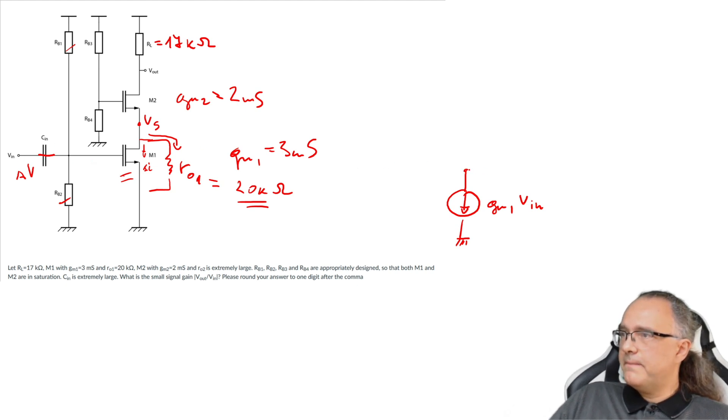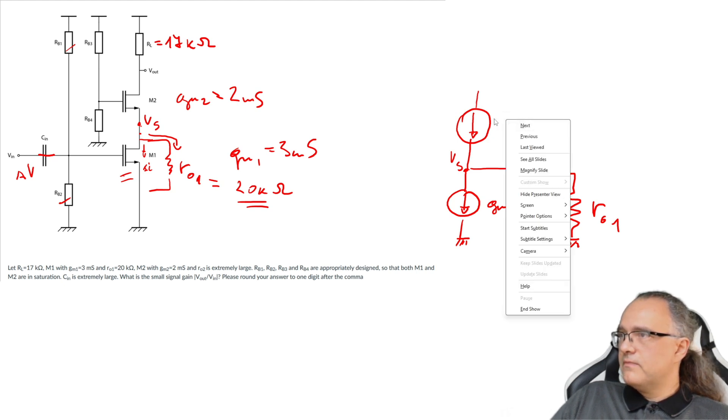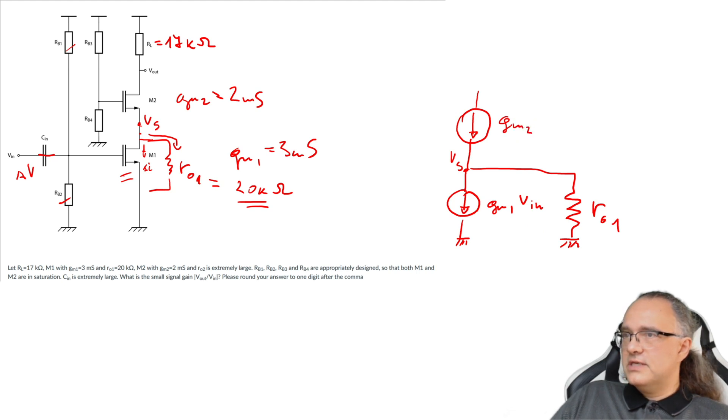Now we have in parallel here is the drain. This is this node and in parallel is R out one. So I have to draw R out one to ground and this node, this node is Vs. So this is this node. Here I have the source of M2. So M2 I will draw again with its voltage dependent current source with the value of GM M2, its VGS2.